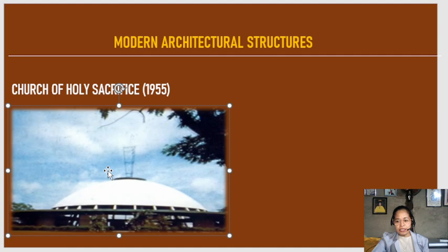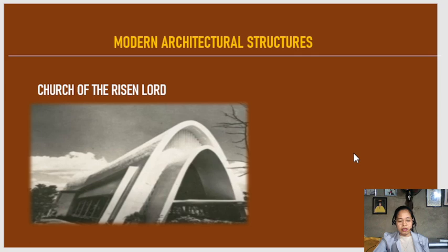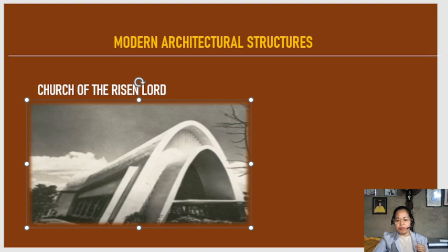The Church of Holy Sacrifice was built in 1955 and was the first major architectural work of architect Leandro Loxin. He chose a round plan as the most suited for giving the congregation a sense of participation in the mass. We also have the Church of the Risen Lord, which was designed to have an exterior shape similar to a parabola. This architectural design symbolizes the belief that there are imperfections outside the Christian world and that our aspirations to be perfect are useless.